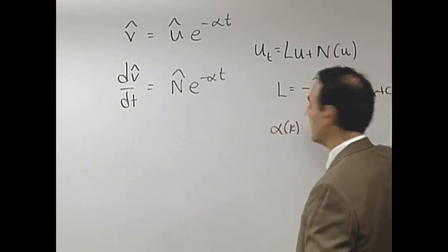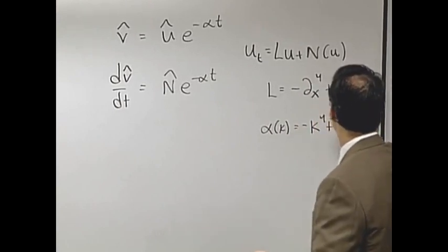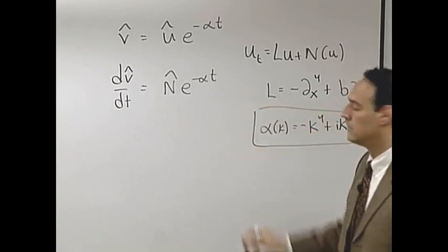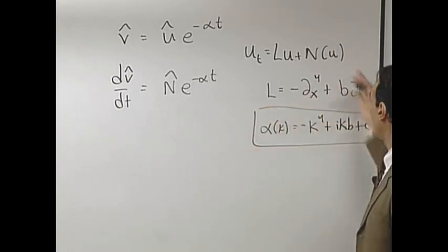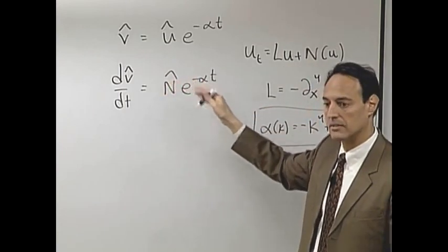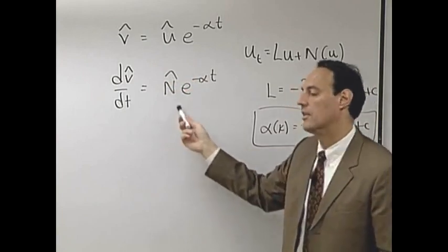Alpha k would be minus k to the fourth plus ik with a b in there plus c. And in some sense you said if I've got all these terms in the linear term, this here accounts for it explicitly and exactly, and then ask what are the corrections now from having the nonlinear term.